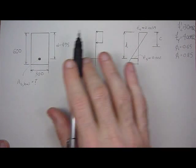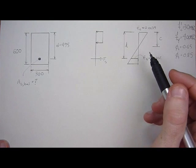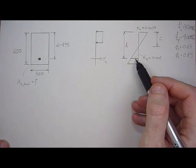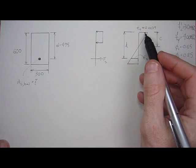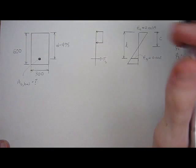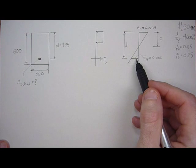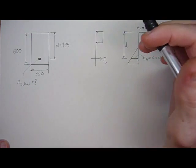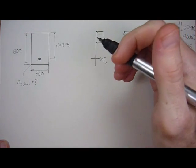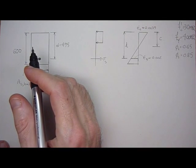We always want to stay below that condition so that the steel yields before the strain in the concrete reaches ultimate. Because if the strain in the concrete reaches ultimate before this strain, it would be a very abrupt failure. If the strain reaches capacity first, then you'll see yielding because steel is a very ductile material. That's why we always want to stay below the balanced condition.